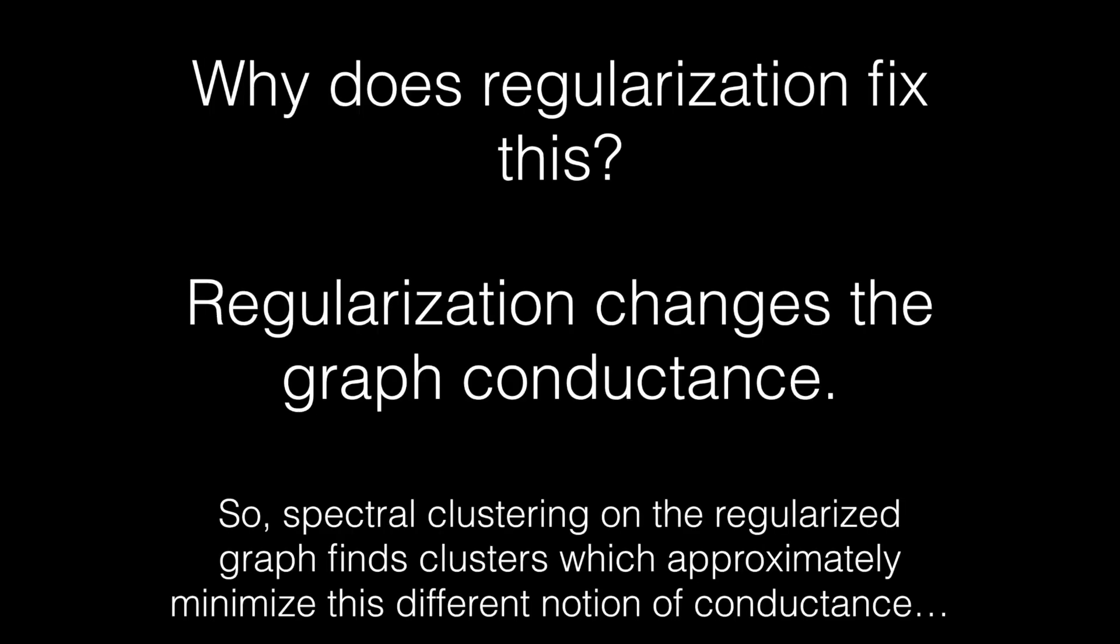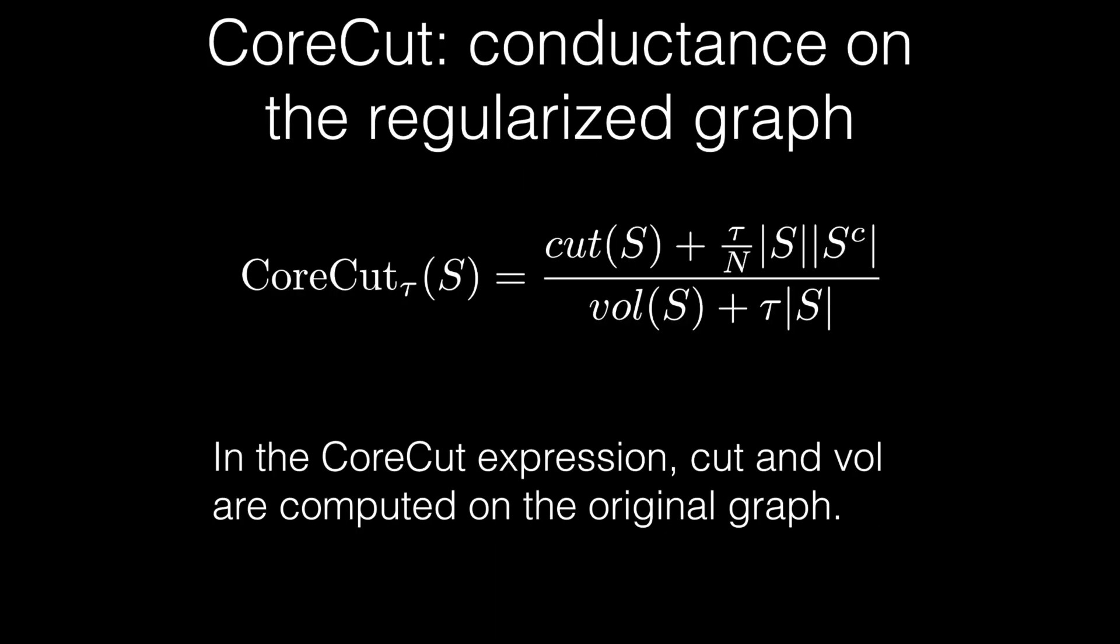Why does regularization fix this? Because regularization changes the graph conductance. Spectral Clustering on the regularized graph finds clusters which approximately minimize a different notion of conductance, which we call the core cut.